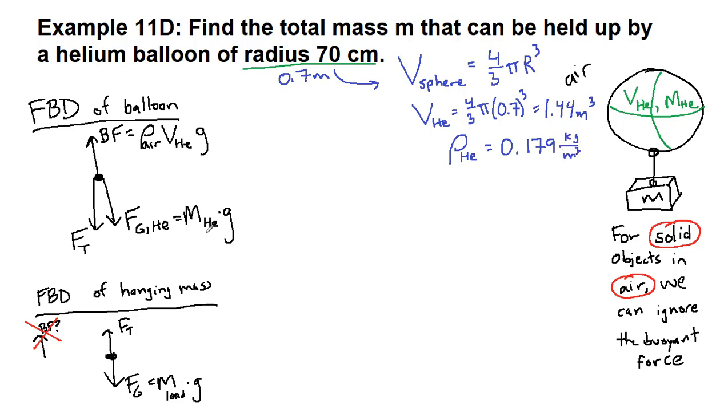And so in order to know what the mass of helium is, we can use the same thing we've seen in the two other examples. That the definition of density means we can use this comparison. When we multiply both sides by volume, we'll get 0.179 times 1.44.